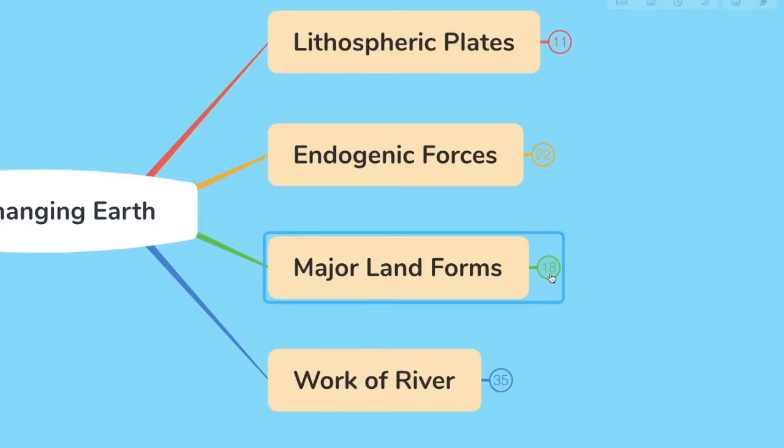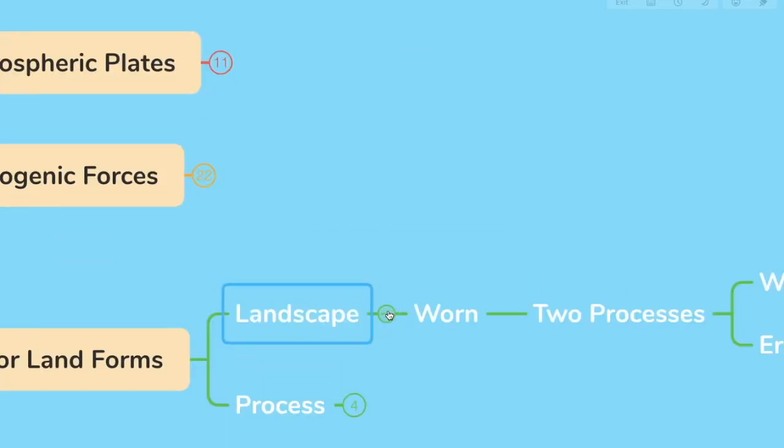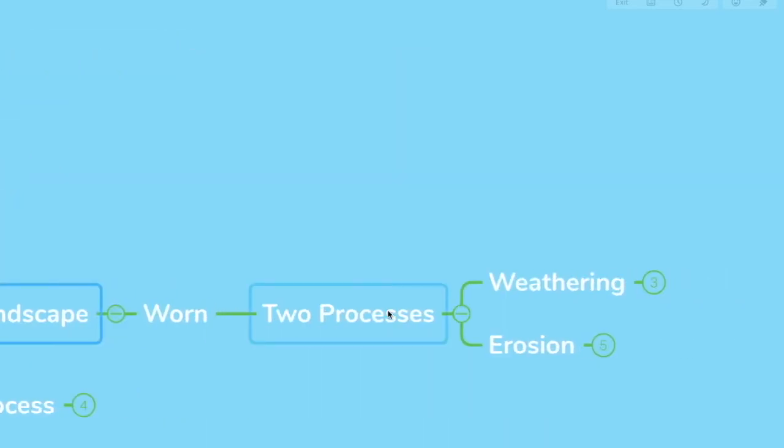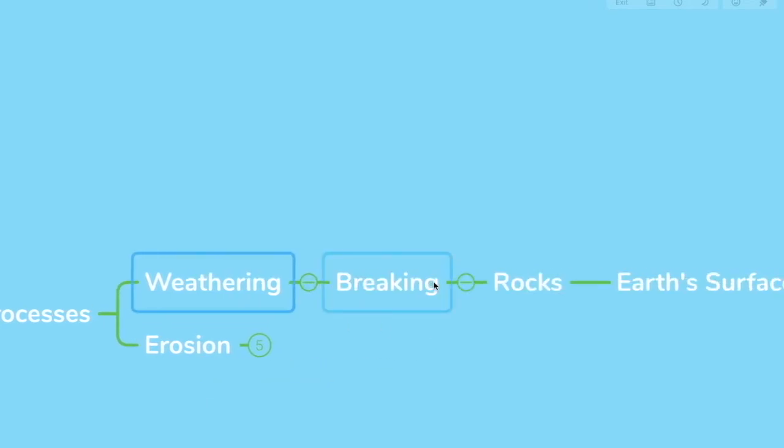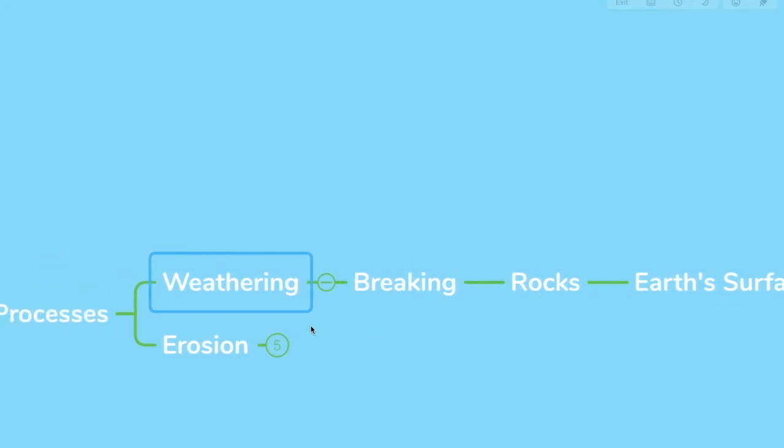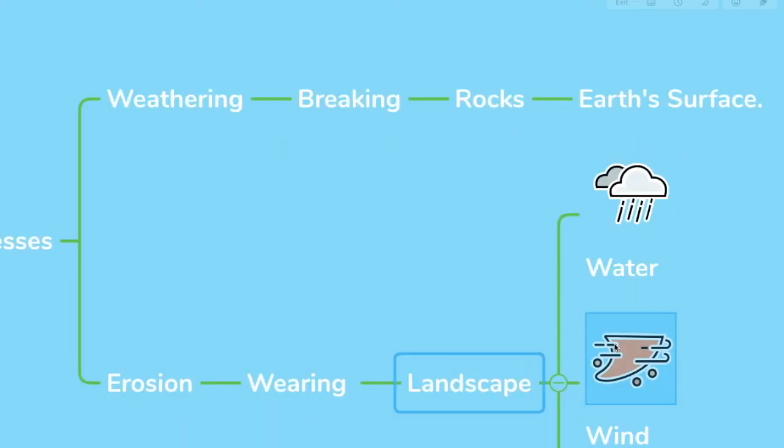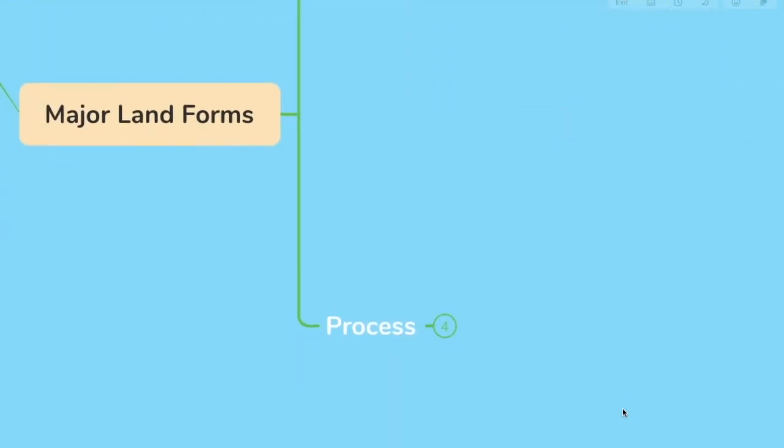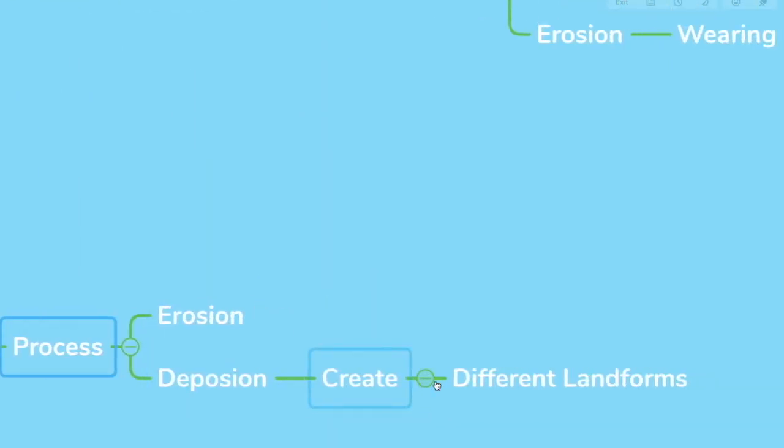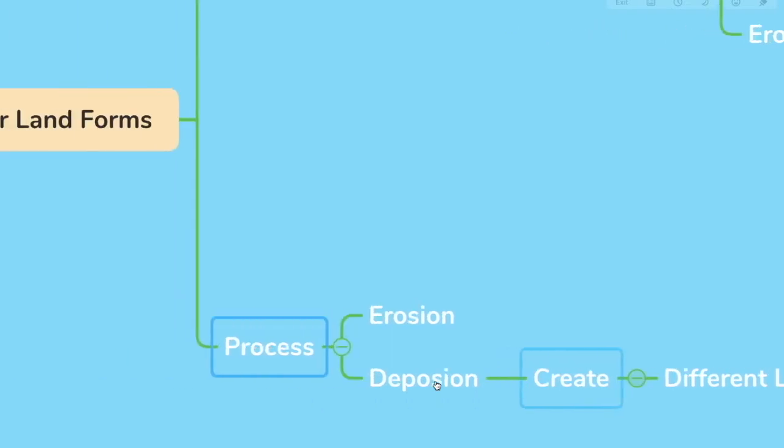Let's look at the major landforms. Now, the landscape is being continuously worn by two processes. One is weathering and the other is erosion. So what's weathering? Basically breaking of rocks on the earth's surface. And what's erosion? It's wearing of the landscape by different agents like water, wind and ice.